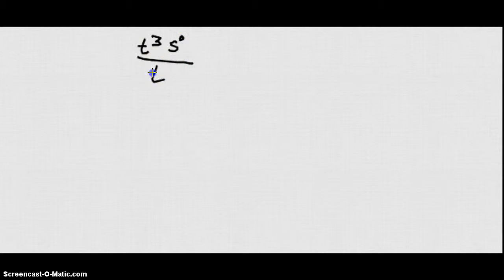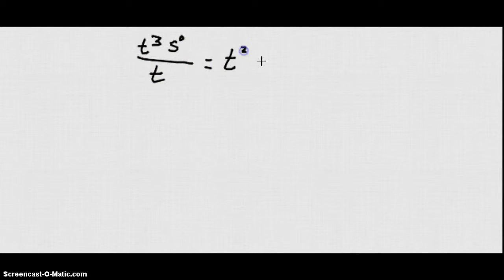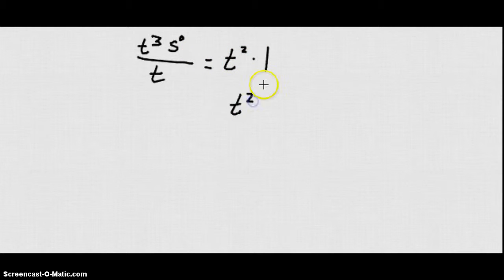Let's look at t cubed times s to the zero power, all over t. This gives us t to the cube minus one, which is t squared. And remember, s to the zero is 1, so we're just multiplying by 1. My final simplified answer is t squared.